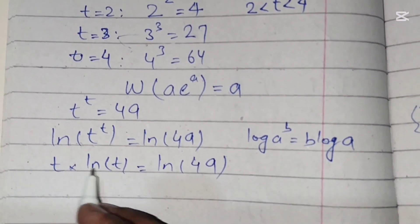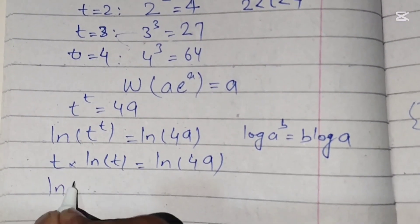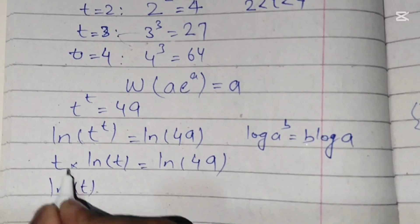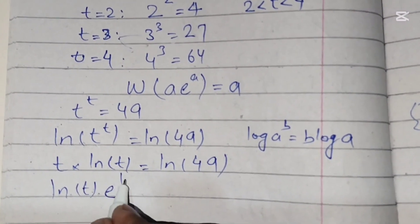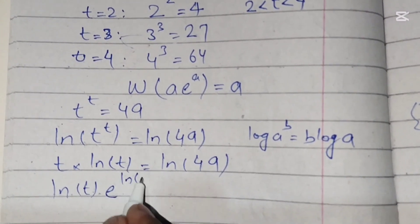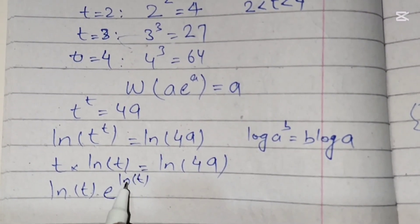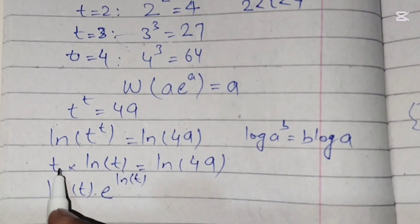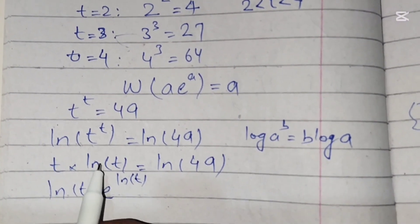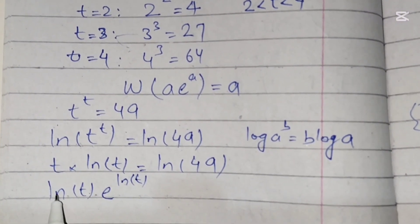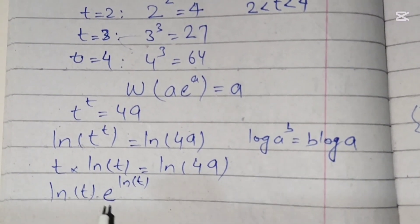We can rewrite this as ln(t)·e^(ln t) = ln(49), since e^(ln t) is equal to t. So these two expressions represent the same thing.